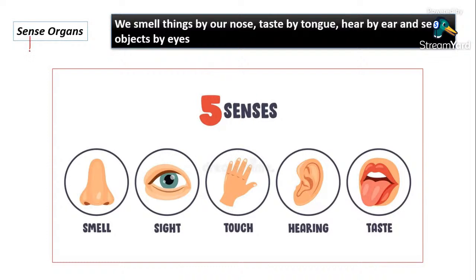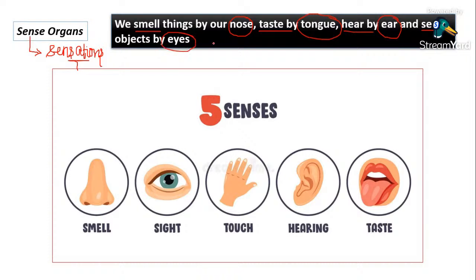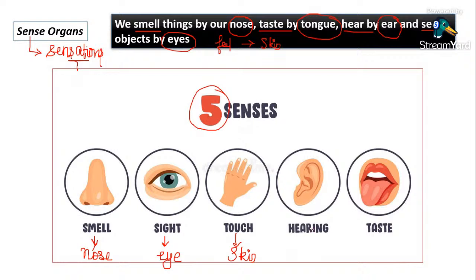A sense organ is an organ concerned with sensation. We can smell through our nose, we can taste by our tongue, we can hear by our ears, we can see by our eyes, and we can feel by our skin. There are mainly five senses: smell through the nose, sight by the human eye, touch by the skin, hearing by the human ear, and taste by the tongue.